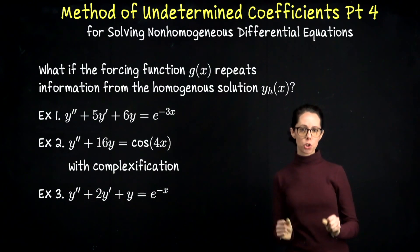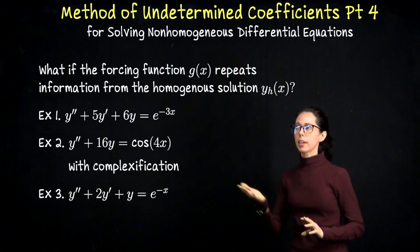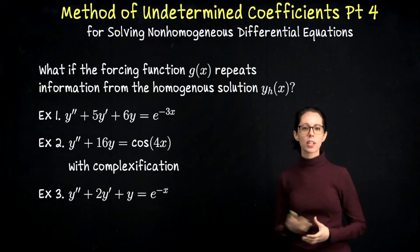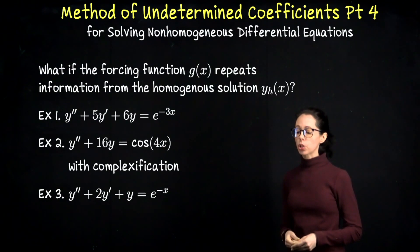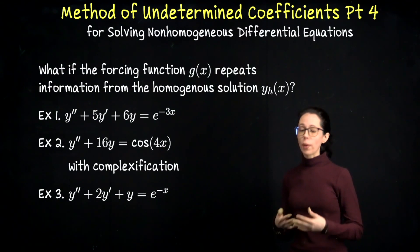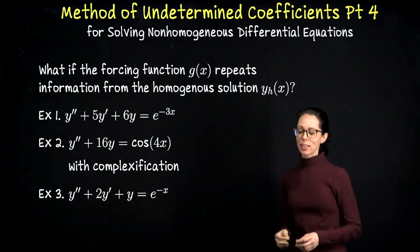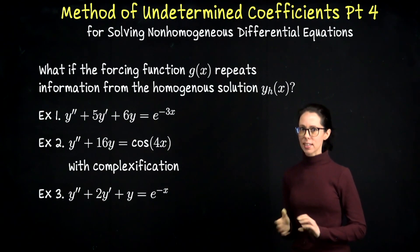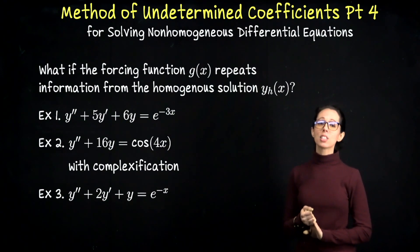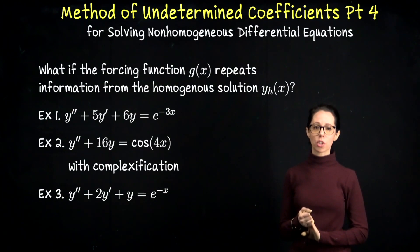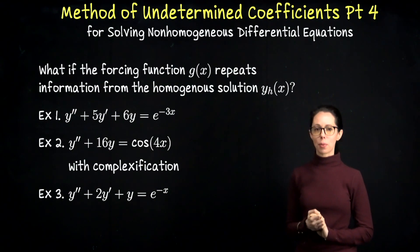I'm going to jump straight to the form of the homogeneous solution. I'm not going to write out the characteristic equation and solve for the roots. Then I will show you what the particular solution should be in order to address the fact that your first instinct for the particular solution might duplicate something from the homogeneous solution. So let's start with this first example.